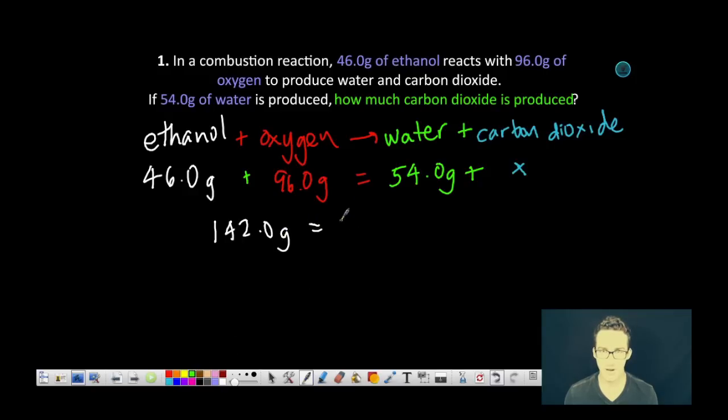On the product side, we've got our 54 grams of water and our unknown amount of carbon dioxide. But we know that together the sum of the water and carbon dioxide must equal the 142.0 grams. So all we need to do is subtract our 54.0 grams from either side of the equation to get our mass of carbon dioxide formed.